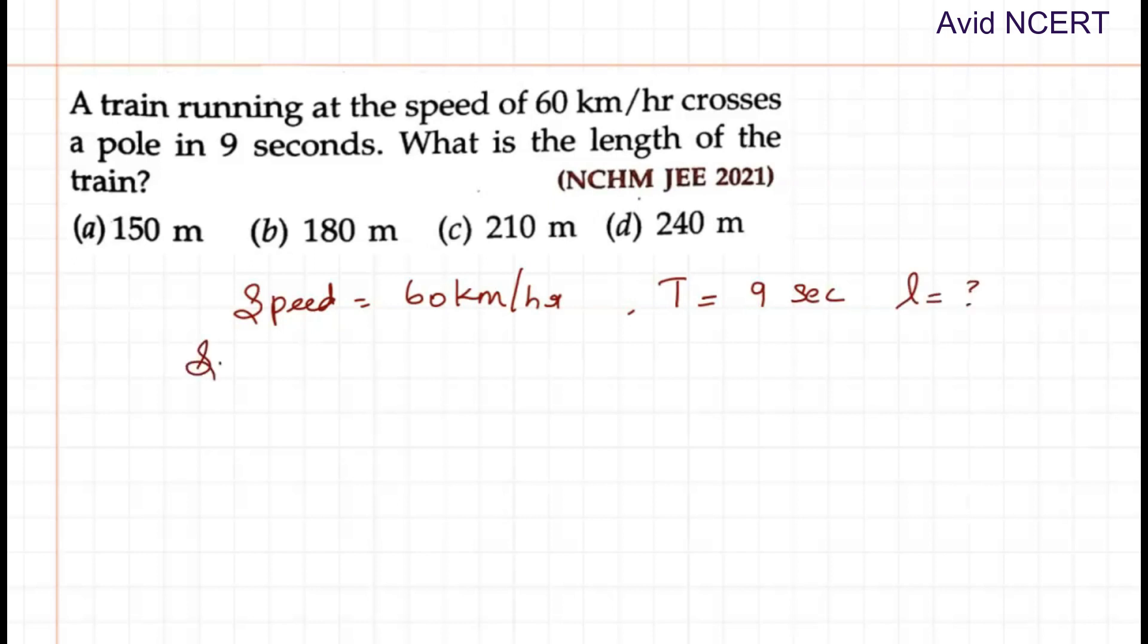So the formula we know here is speed equals distance by time. Since we have to find the distance, it's speed multiplied by time. So distance can be found by speed multiplied by time.